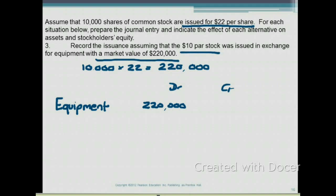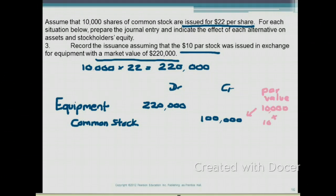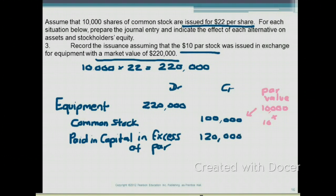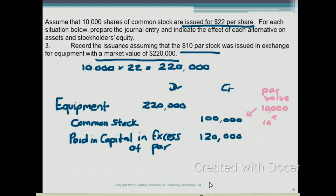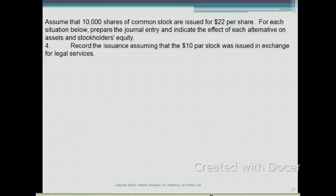In exchange, we issued common stock. Debit equipment for $220,000. Credit common stock for $100,000 — that's $10 par value times 10,000 shares. The journal entry is not in balance, so we credit paid-in capital in excess of par for $120,000, which is the difference between the market value of $220,000 and the par value of $100,000. Now the entry balances. Assets increased by $220,000 and stockholders' equity also increased by $220,000.